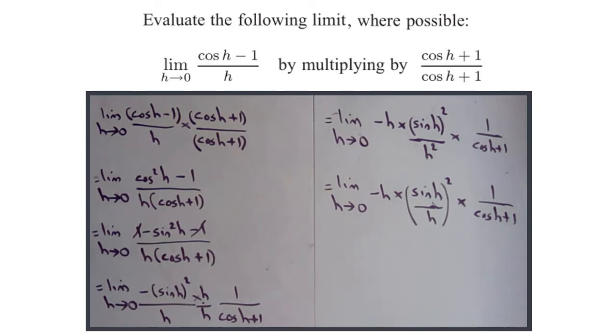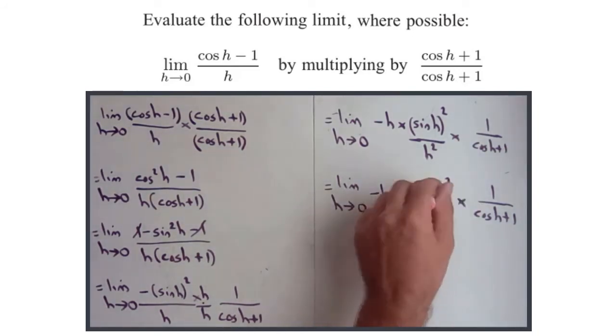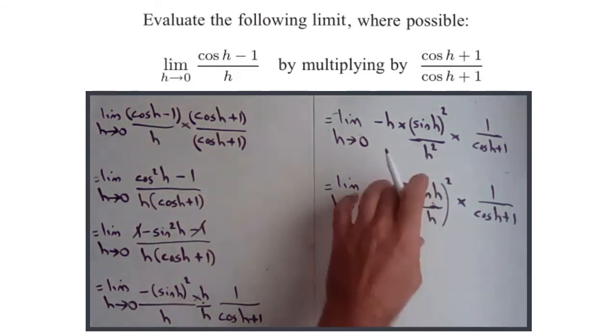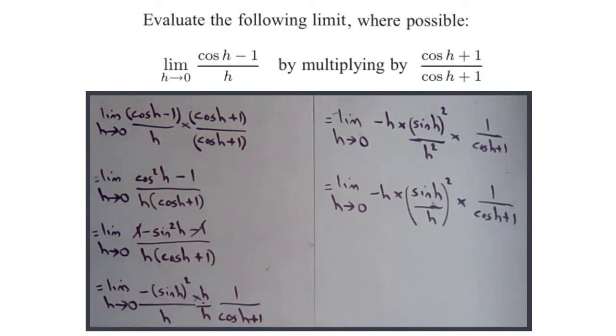So now, remember, limit laws say the limit of the product is the product of the limit, so we can find the limit as h approaches 0 of minus h, and the limit as h approaches 0 of sine h over h squared, and the limit as h approaches 0 of 1 over cos h plus 1. There's also another limit law that says that if you've got the limit of something squared, then you can find the limit of the something, and then square it. So I'm obviously not going to write all that down, I wouldn't have enough space, and I wouldn't expect you to, it's not really beneficial.